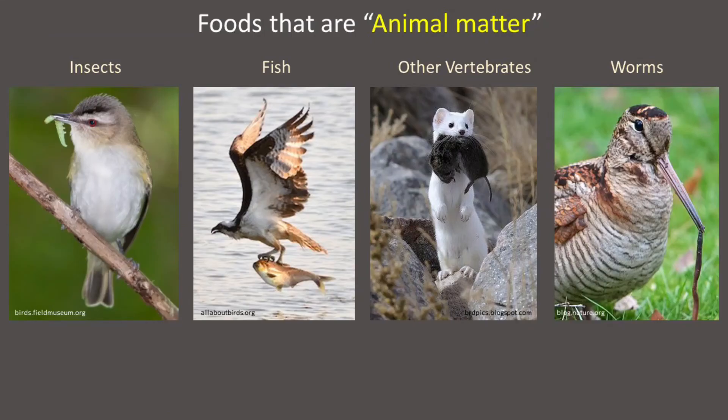Foods that are animal matter include insects, fish, other vertebrates, and worms. Wildlife that eat primarily insects are called insectivores. Most songbirds, shrews, amphibians, and some snakes are insectivores.